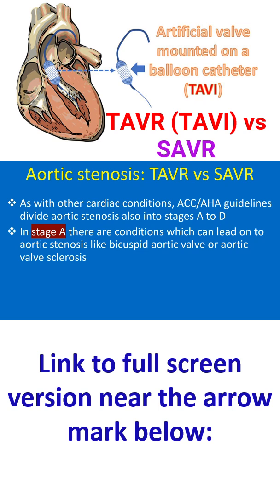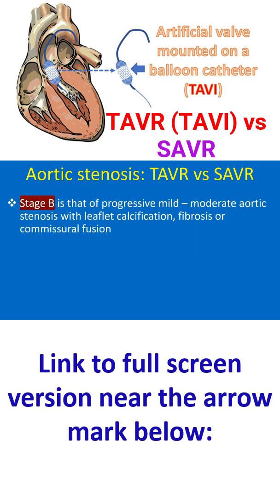In stage A, there are conditions which can lead on to aortic stenosis, like bicuspid aortic valve or aortic valve sclerosis. Stage B is that of progressive mild to moderate aortic stenosis with leaflet calcification, fibrosis, or commissural fusion.